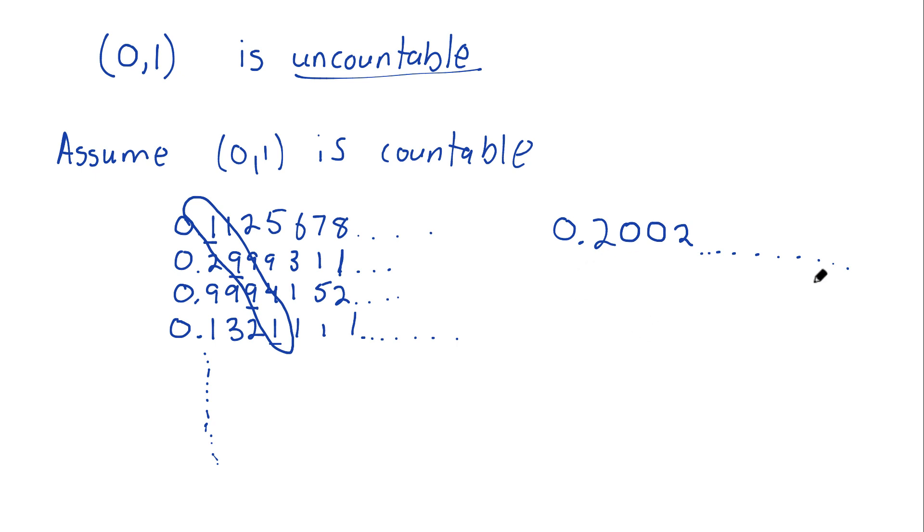Well, this number that I've created, or it would take me an infinite number of times to create, but you know, let's say I create this number in this fashion. Well, it's not the first number, right? It's not the first number because the first digit was different. It's not the second number because the second digit is different. It's not the third number because the third digit was different. It's not the fourth number because the fourth number was different.